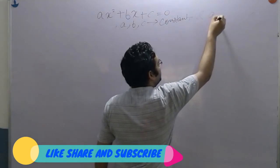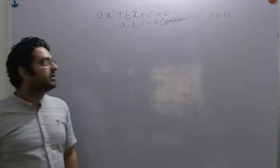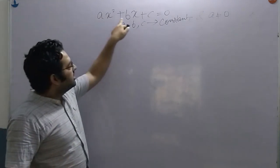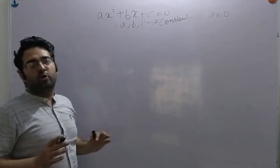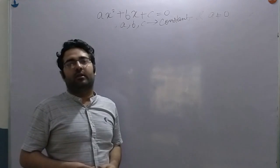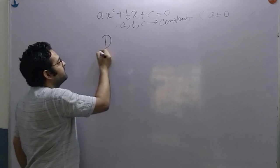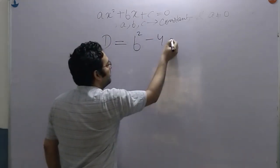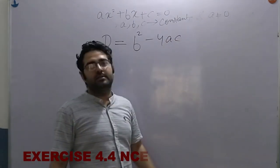We have a condition that a is not equal to 0. If a is equal to 0, then the equation becomes bx + c = 0, which is not a quadratic equation. So quadratic equation has this condition. Now, the D value, as you all know, is b² minus 4ac — that is the discriminant formula from the last lecture.